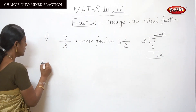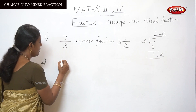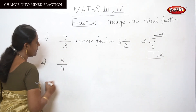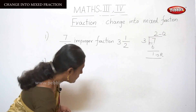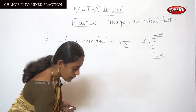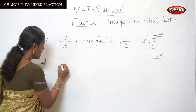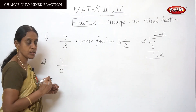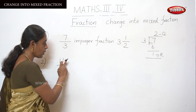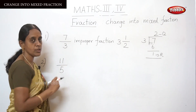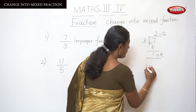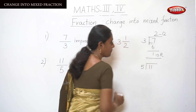One more example. First, 5 by 11 — sorry, this is a proper fraction. The correct improper fraction is 11 by 5. Improper means the denominator is smaller than the numerator. Here you have to divide the numerator — divide 11 by 5.